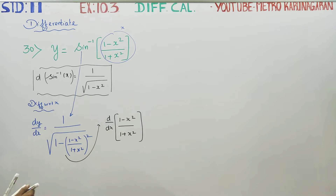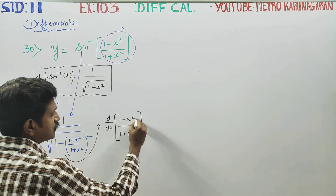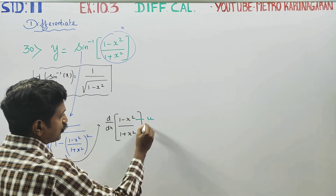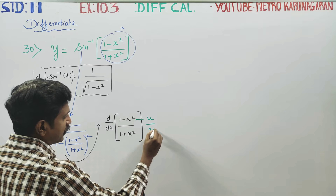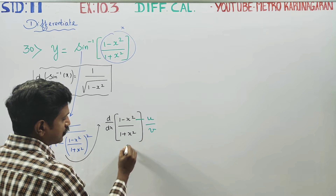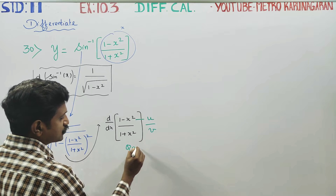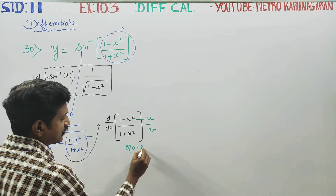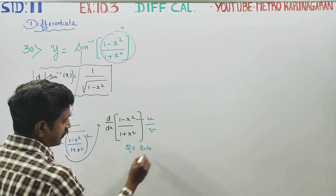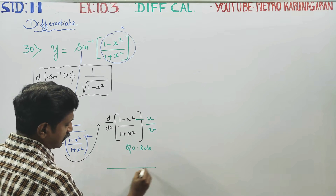To differentiate this, I am going to use the formula called u by v formula — that is, the quotient rule. Using the quotient rule, we get the denominator as v square.